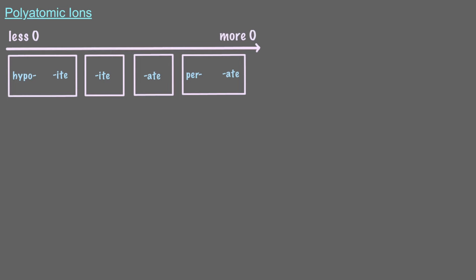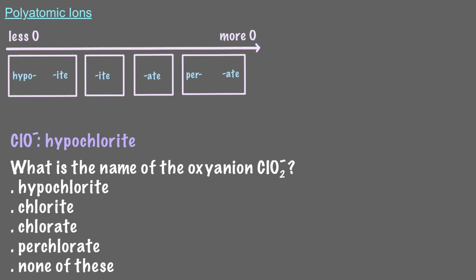Chlorine makes 4 different oxyanions. We saw earlier in the video that ClO- is called hypochlorite. What is the name of the oxyanion ClO2-? We know that ClO- is hypochlorite. ClO2- has 1 more oxygen than hypochlorite, so we name it chlorite.